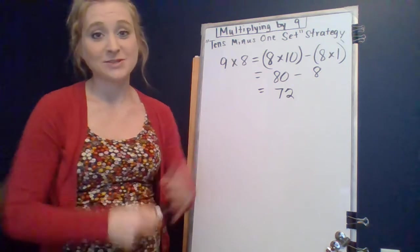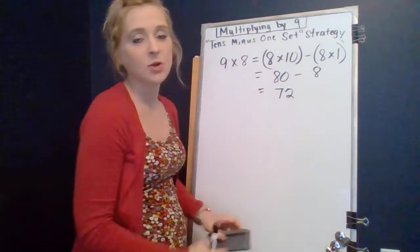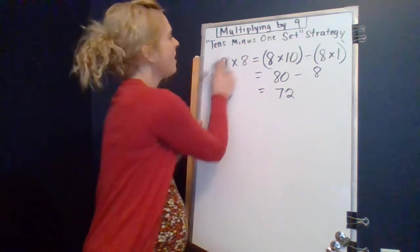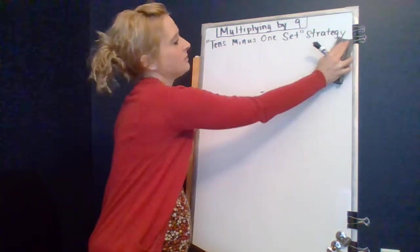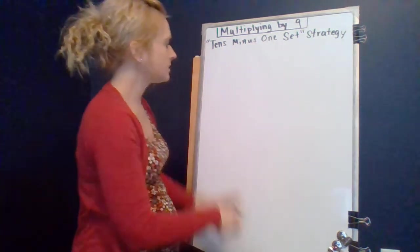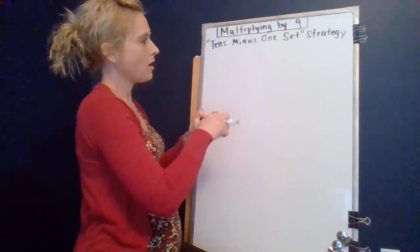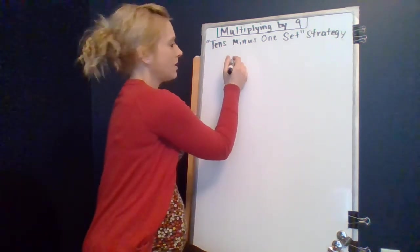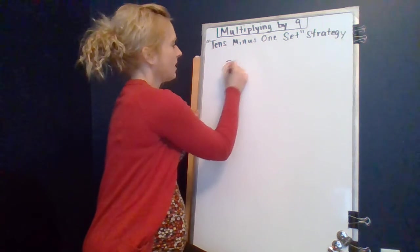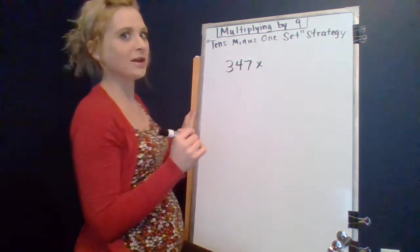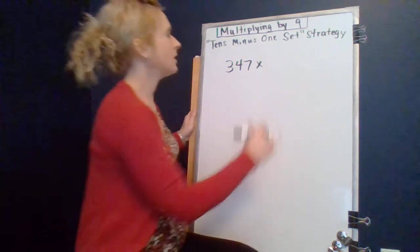I think it would be cool for us to do that larger problem just so that you can see you can use this strategy beyond just basic facts that could be more efficient than maybe using the standard algorithm or using something else. So, 347 I think is what I said earlier, right? Let's hope my brain is working this morning and I can subtract that group quickly.